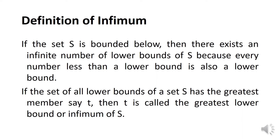Next, the definition of infimum: If the set S is bounded below, then there exists an infinite number of lower bounds of S, because every number less than a lower bound is also a lower bound. If the set of all lower bounds of S has the greatest member, say T, then T is called the greatest lower bound (GLB) or infimum of the set S.